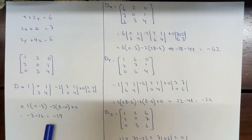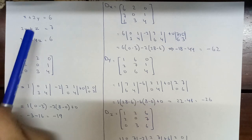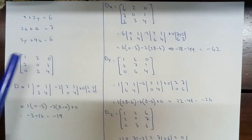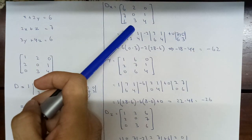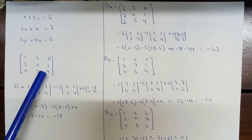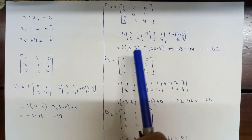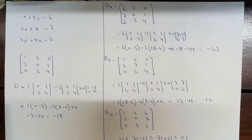Now we determine the three determinants. For Dx, we replace the first column with 6, 7, and 6, and write the remaining columns the same: 2, 0, 3 and 0, 1, 4. We determine its determinant, which equals minus 62.